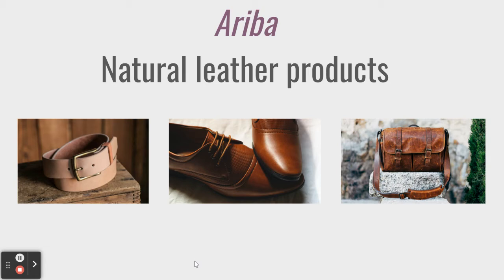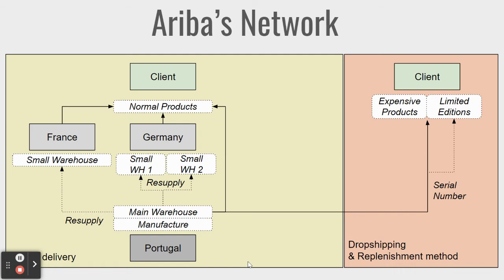Based on what I understand, your flow might be something like this: you have your manufacturing in Portugal, whereas you have separate companies in France and in Germany. Your German market might be a bit bigger, because there you have two warehouses — one for storage and one for sales. And for the expensive and limited edition products, you have serialized products which you directly ship to your clients from Portugal.